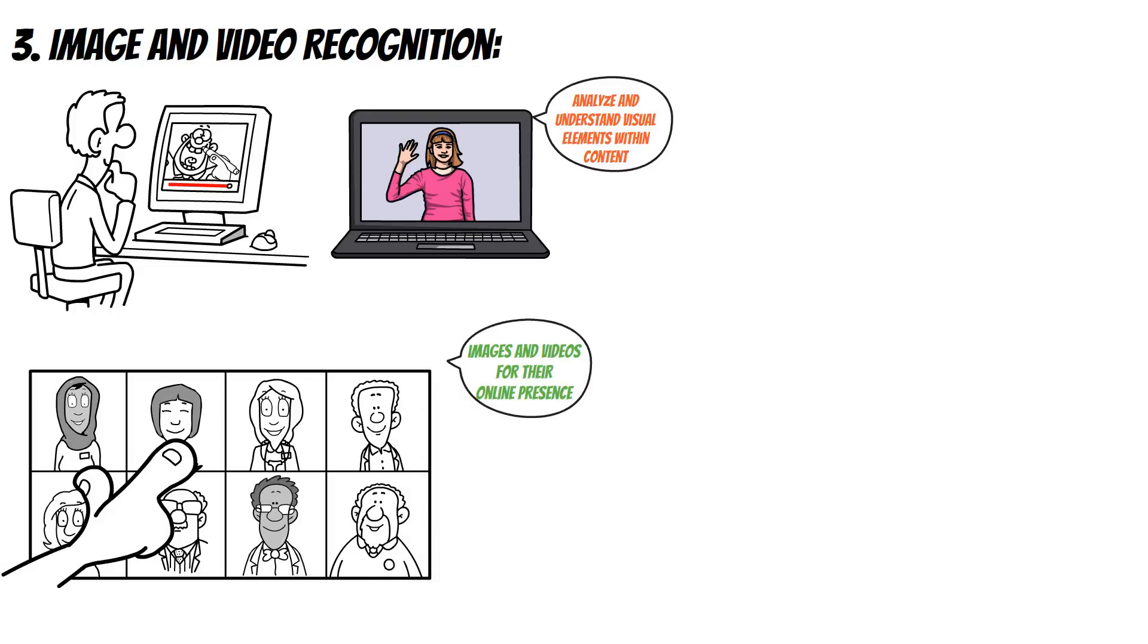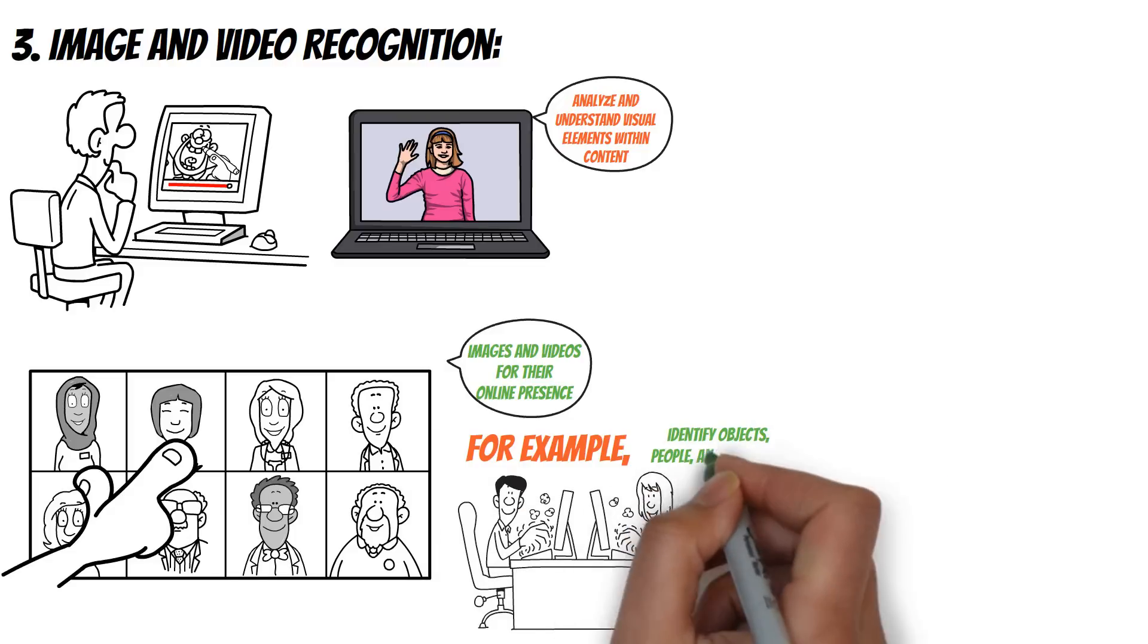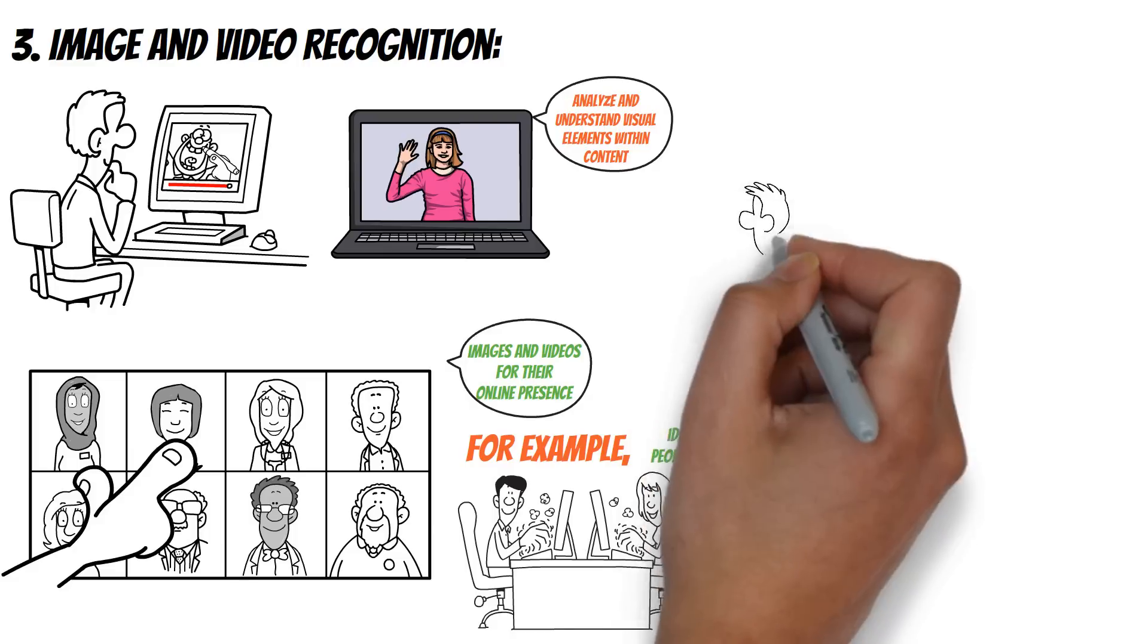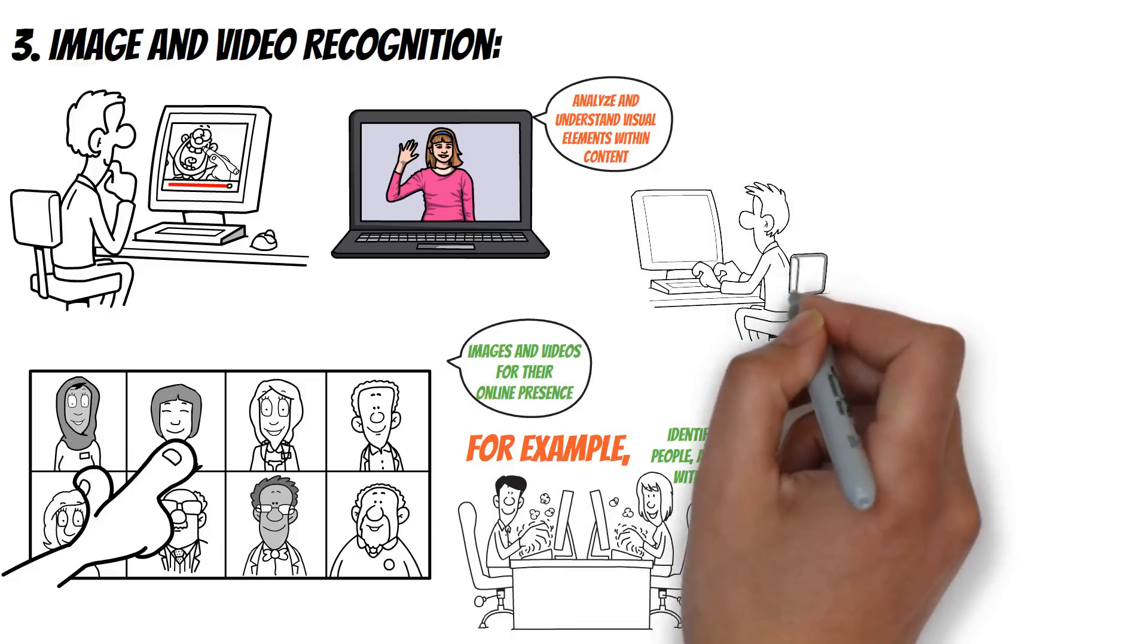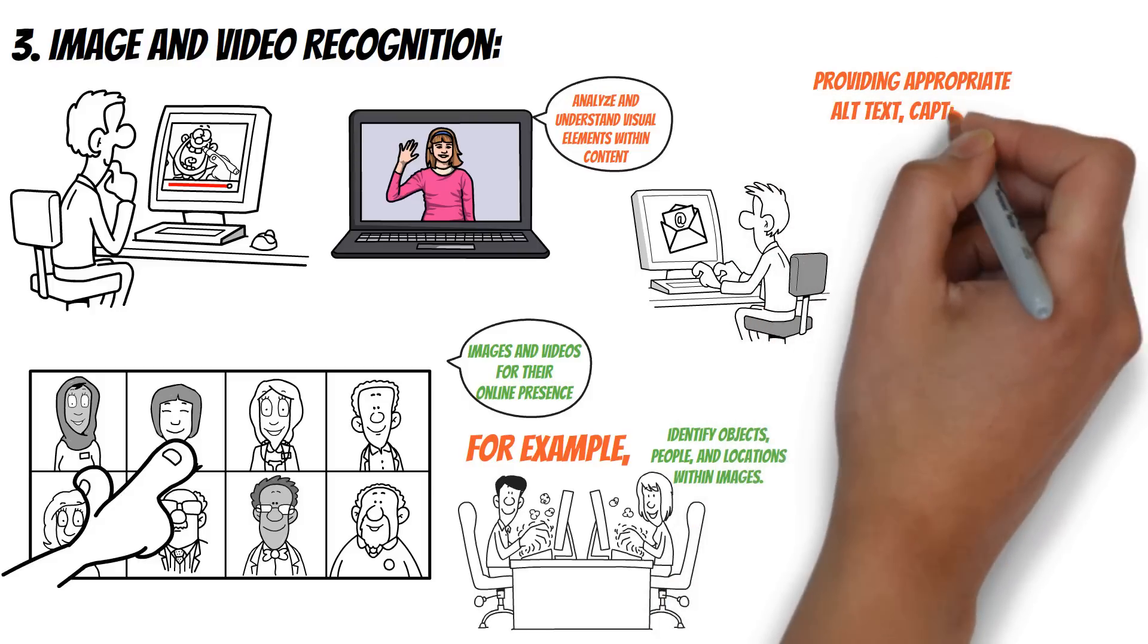For example, AI-powered image recognition algorithms can identify objects, people, and locations within images. This enables search engines to provide more accurate image search results, making it easier for users to find relevant visual content. SEO practitioners can optimize their images by providing appropriate alt text, captions, and relevant metadata, enhancing their visibility in search results.